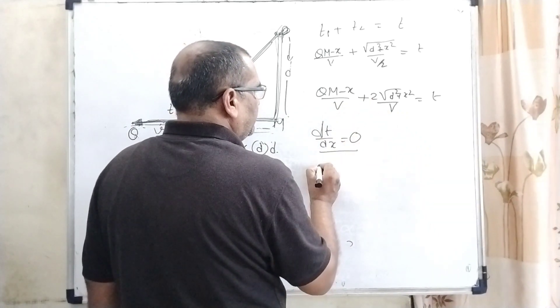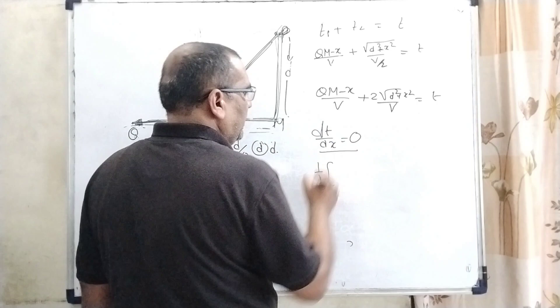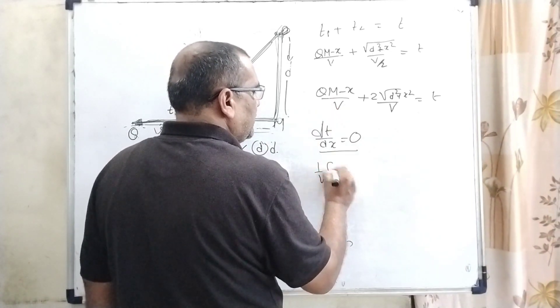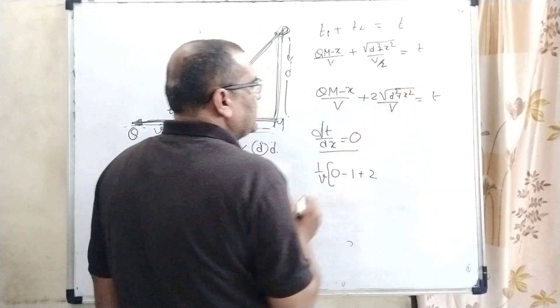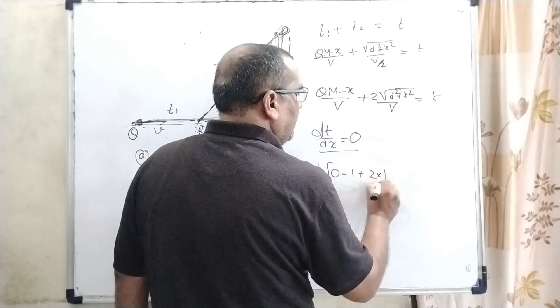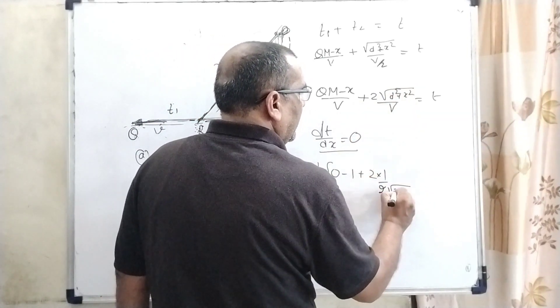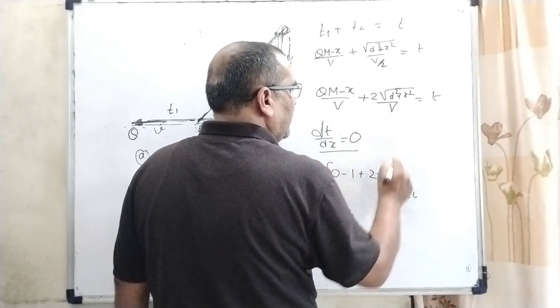So here, let us first take V common. QM is constant means 0, minus 1. And root D square plus x square, so 1 by 2 root D square plus x square is function of function. So now 2x, and this is dT by dx.